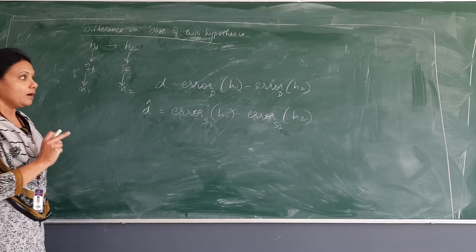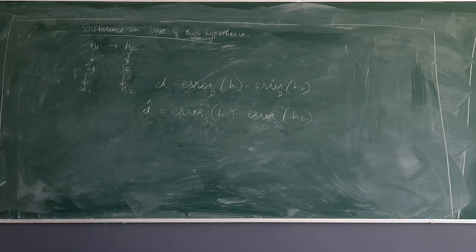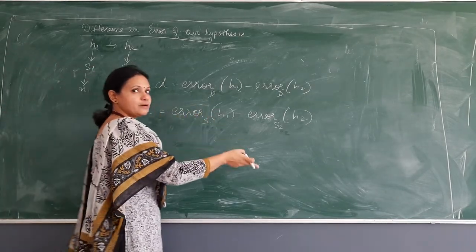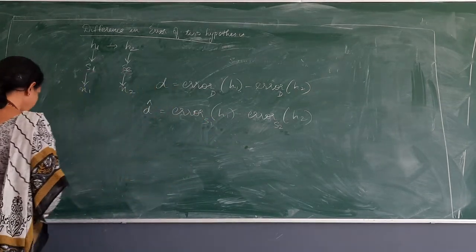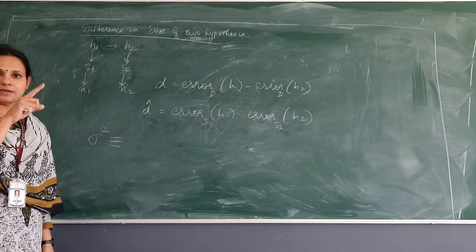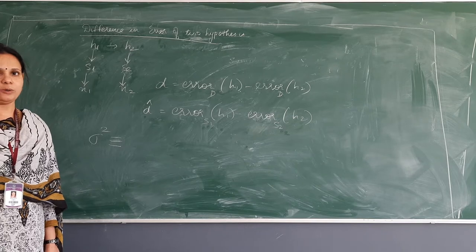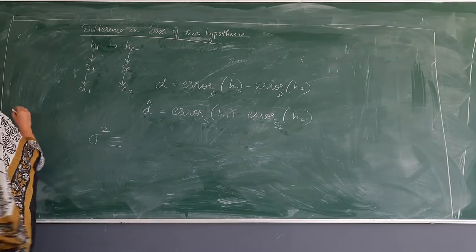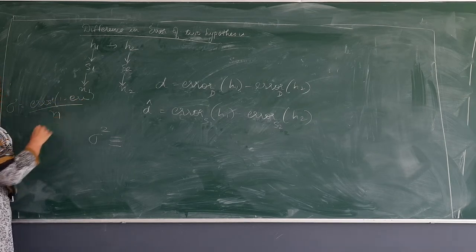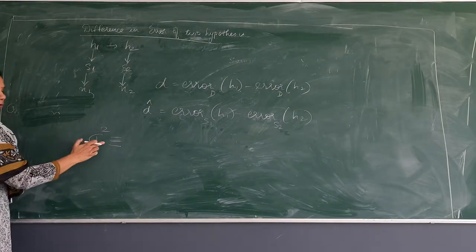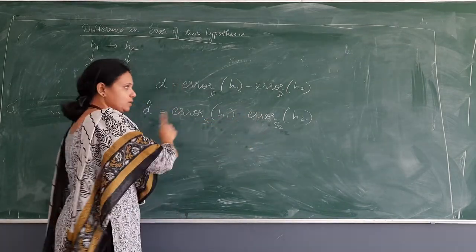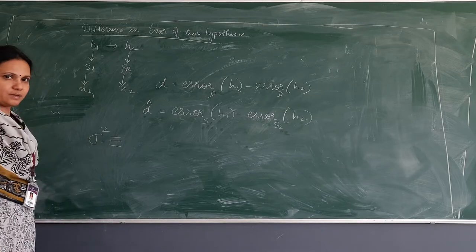Now you can also show that the variance of the distribution is the sum of the errors of the two distributions. When I define variance — sigma-square — we know that variance is nothing but error times 1 minus error divided by N, which we have already done earlier. Since I have two errors, one is of H1 and one is of H2, the summation of the two together will be my sigma-square.